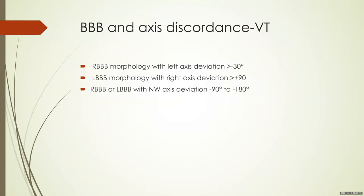Bundle branch block and axis discordance: RBBB morphology with left axis deviation greater than minus 30 degrees is suggestive of VT. LBBB morphology with right axis deviation greater than 90 degrees is also suggestive of VT. Additionally, any bundle branch morphology with a northwest axis is suggestive of VT. In northwest axis, we cannot definitively say whether it is extreme leftward or extreme rightward axis — but any such discordance favors VT.